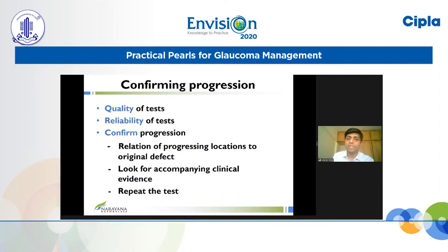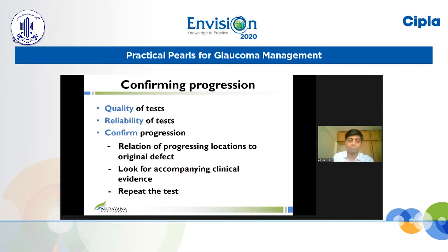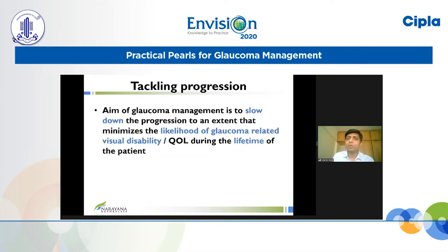To confirm progression, we need good-quality tests with good reliability indices on visual fields. Before confirming progression, ensure that the locations of progression on your tests relate to the original defect, because that is how glaucoma commonly progresses. Also look for accompanying clinical evidence before making the decision, and whenever in doubt, repeat the test.